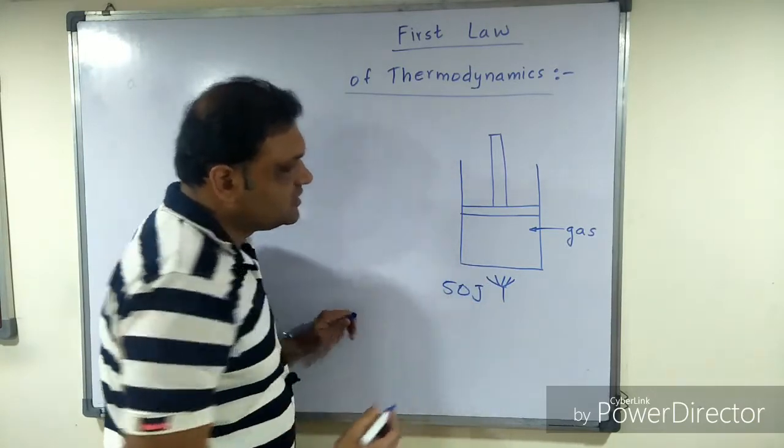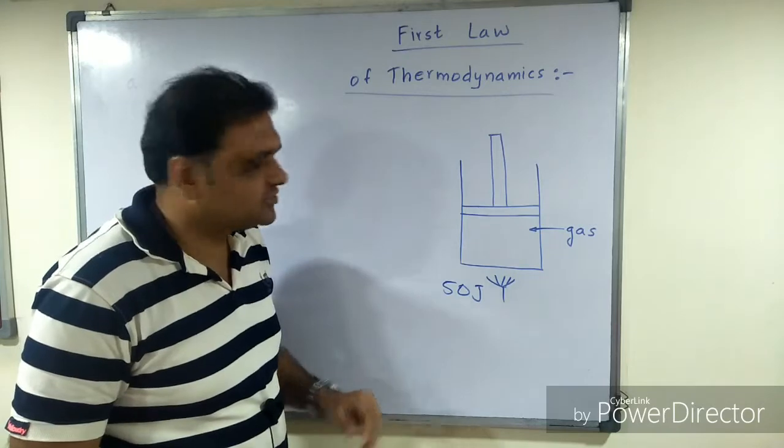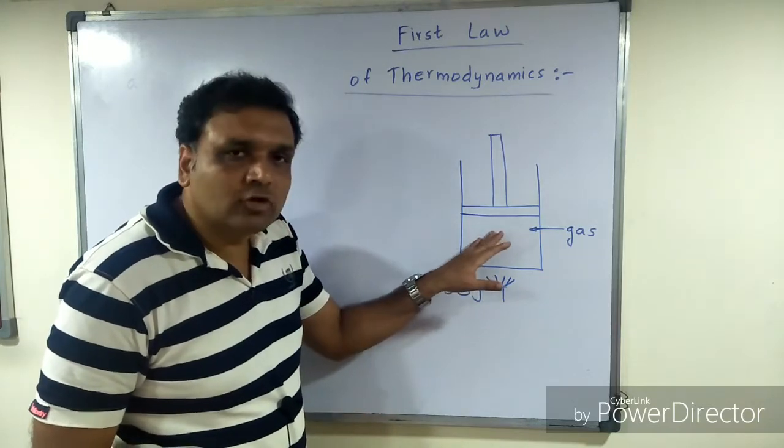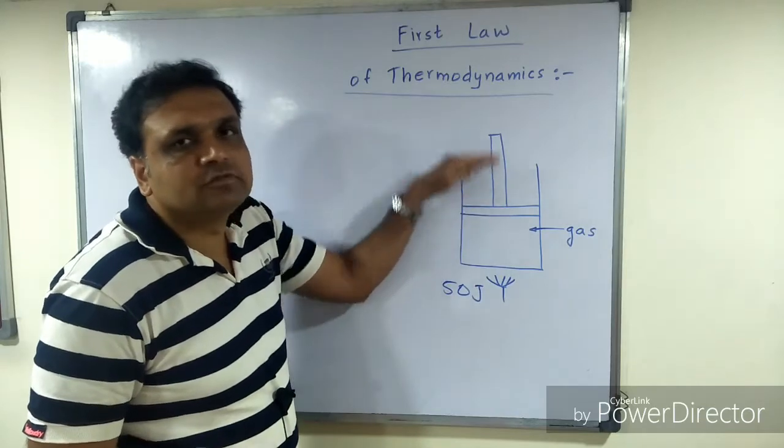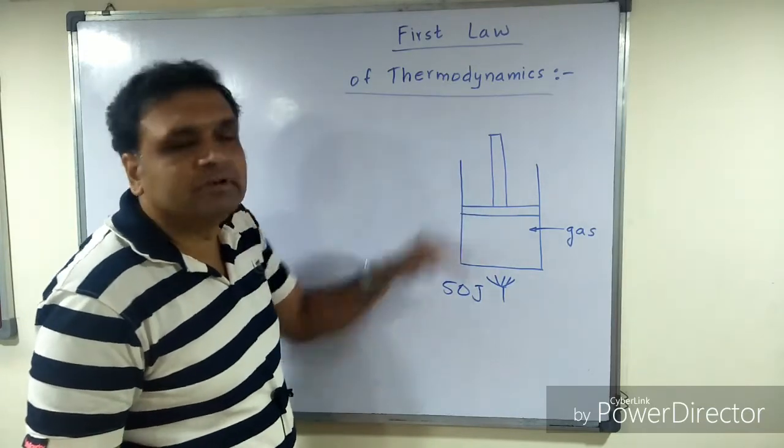Part of it will be stored in the gas molecules as its internal energy. The remainder will be used by the gas to push the piston. Let us imagine 30 joules remains inside the gas molecules, distributed amongst all gas molecules as its internal energy.